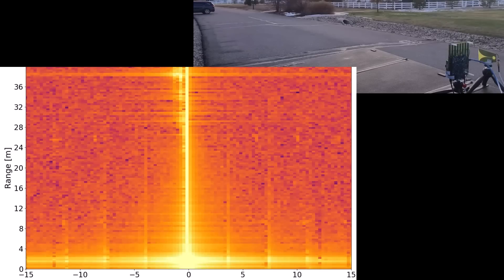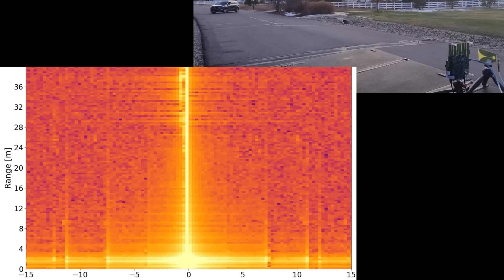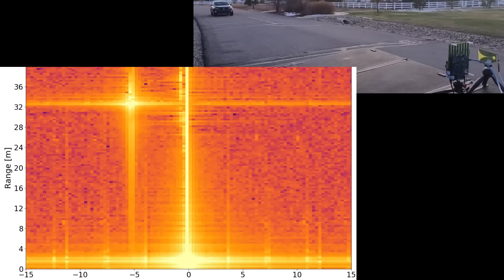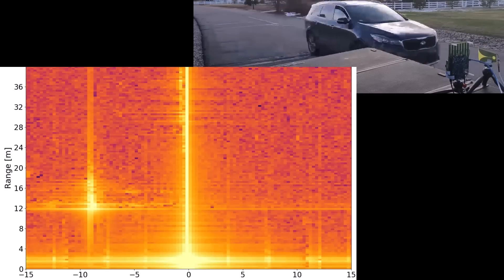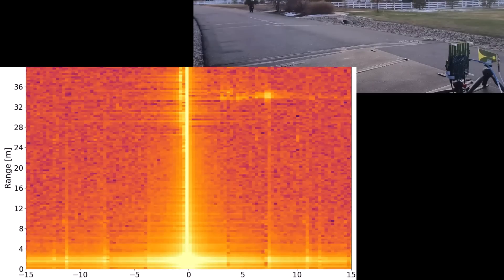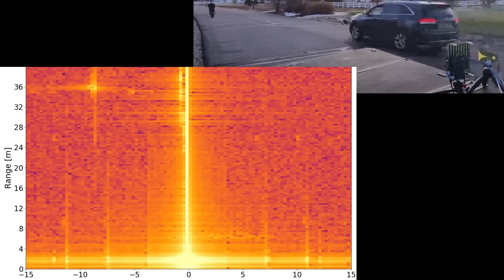You'll also notice that at a range of 0 meters, there's a point there that is very bright. And that is not due to ground clutter. But instead, it is due to the transmitting antenna leaking directly into the receive array. So this could be greatly improved by isolating the transmit and receive antennas. But on a CW radar system, there's always some leakage from transmit to receive.